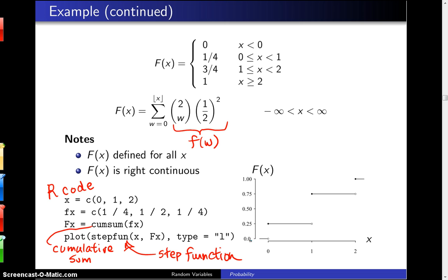But in any case, this is what the cumulative distribution function looks like. It starts at 0, jumps up to 1 fourth, jumps up to 3 fourths, and finally jumps up to 1.